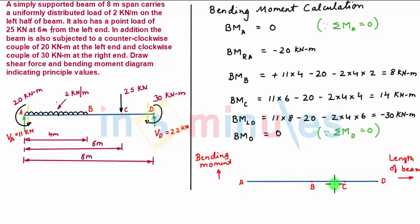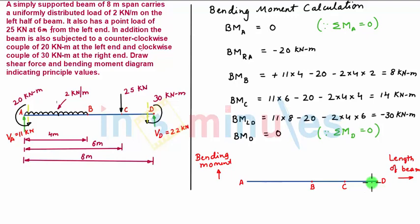Here we have the zero line of our bending moment diagram, which is the beam on the x-axis. On the x-axis we have its length, and on the y-axis we have bending moment. We have denoted all the salient points as A, B, C, and D. Bending moment at A is zero.